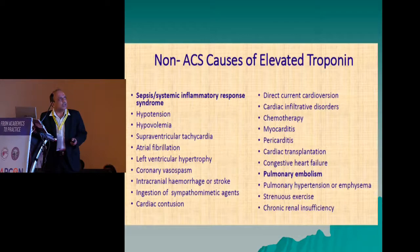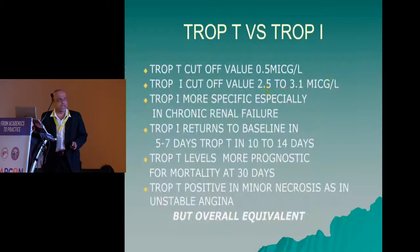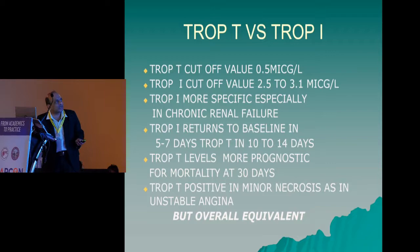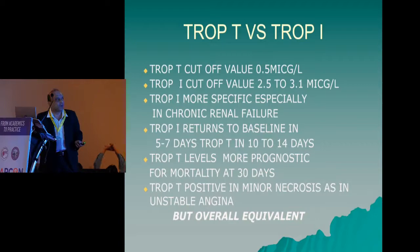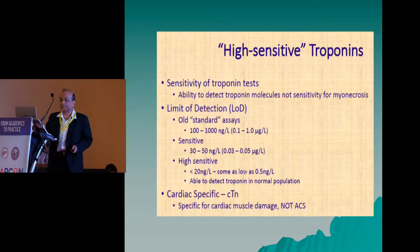Troponin fits all the criteria of an ideal biomarker except for the delay — it takes four to six hours to be detected in blood. Regarding troponin T versus troponin I: the cutoff value for troponin T is 0.5 micrograms and for troponin I is 2.5 to 3.1 depending on the assay. Troponin I is slightly more specific because troponin T can be positive in chronic renal failure. Troponin I returns to baseline in five to seven days while troponin T remains elevated for 10 to 14 days. Troponin T has more prognostic value, predicting mortality at 30 days, and even minor necrosis as in unstable angina can make troponin T positive.